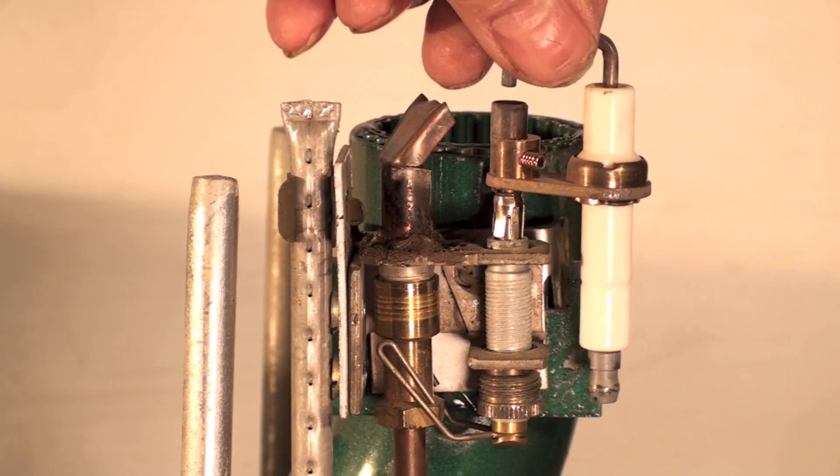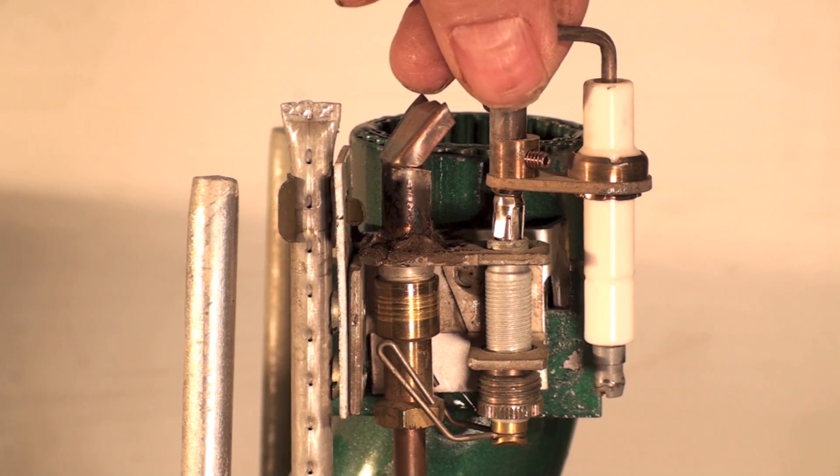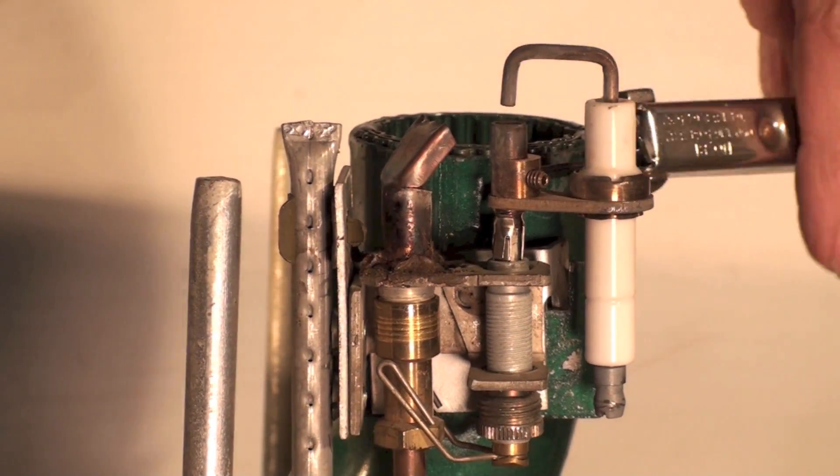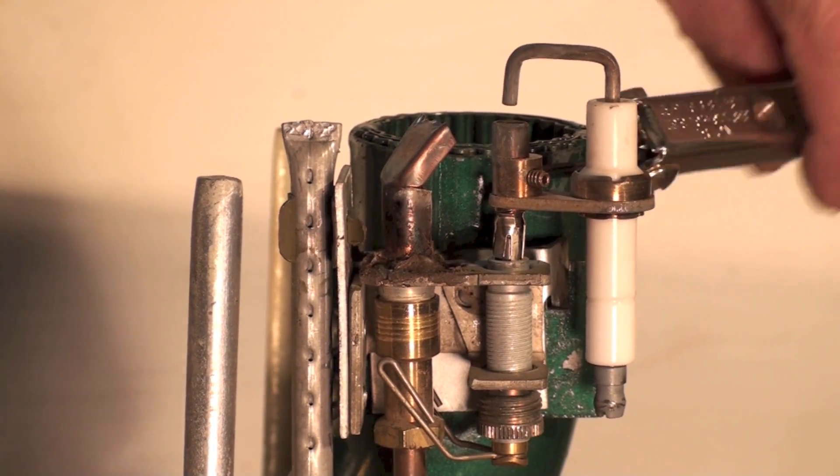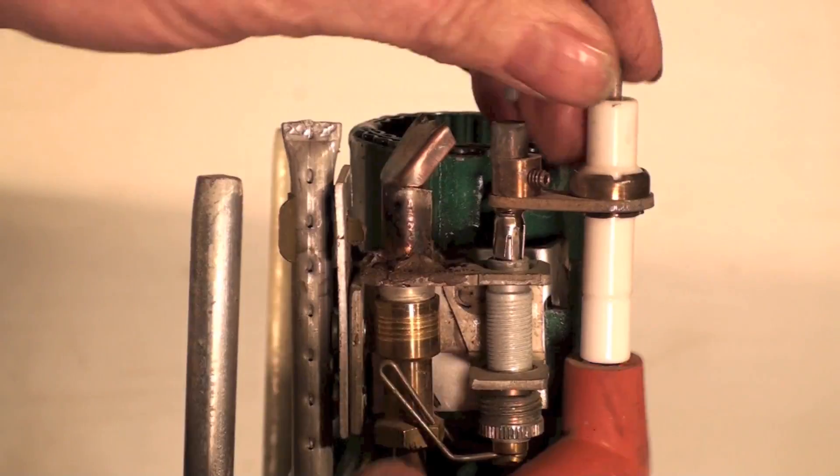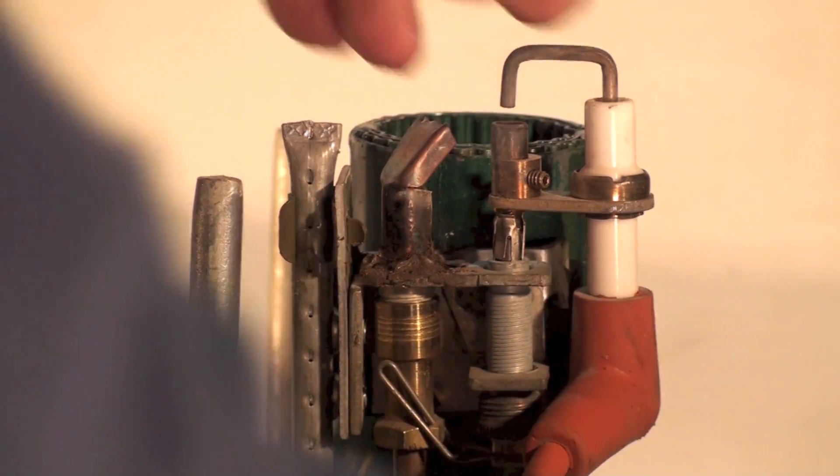Now you can see I've mounted the spark assembly on there and the Allen heads down. I'm going to put the high tension wire on.